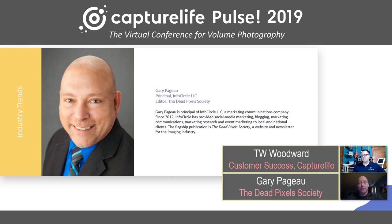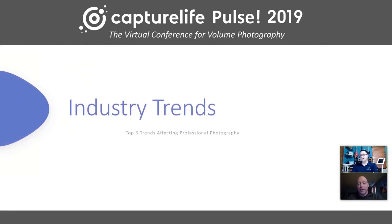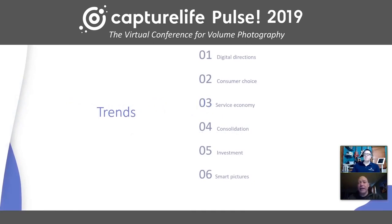To keep it high level and within the timeframe, we're going to be talking about the top six trends affecting the professional photography industry. The six items for today's presentation are: digital directions, consumer choice, the service economy, consolidation, investment, and smart pictures. I think all six of these items will become increasingly important to school picture firms, volume photography firms, and basically anybody who is in the photography business making it a business.